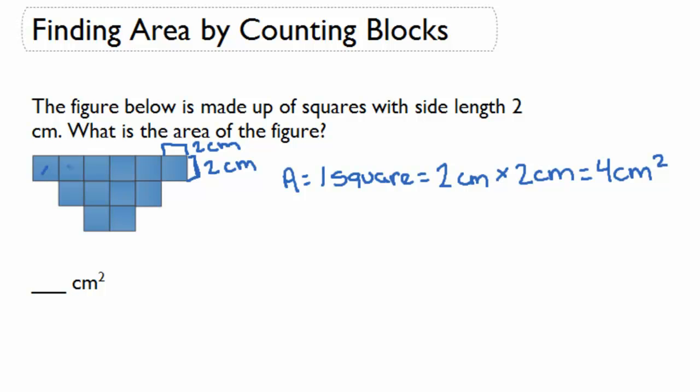So we have 1, 2, 3, 4, 5, 6, 7, 8, 9, 10, 11, 12. So if I have 12 squares times 4 centimeters squared,